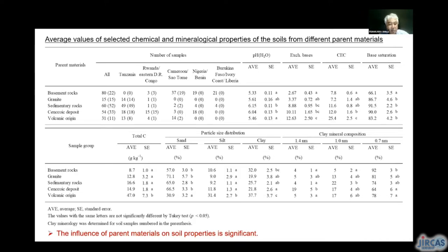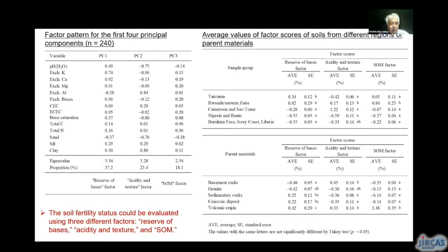We can also interpret the soil properties relating to the parent materials. For example, the soils with volcanic origin exhibit unique characteristics in terms of high CEC, high carbon content, and fine soil texture. We applied principal component analysis to the dataset to summarize the variable parameters to fewer essential characteristics. As a result, reserve bases, acidity and texture, and soil organic matter factors were extracted, as shown in the right-hand tables.